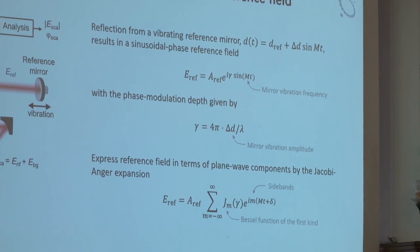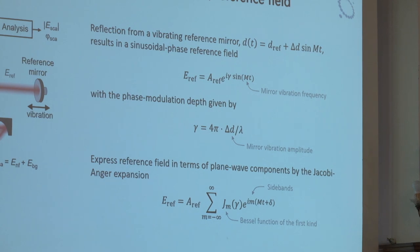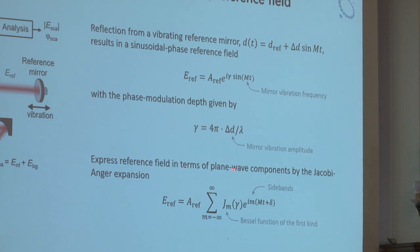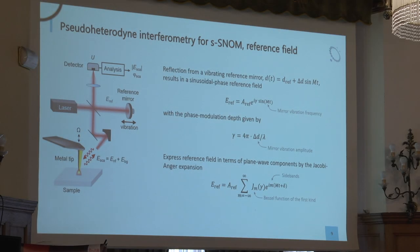This is a little tedious to work with mathematically. We expand this expression in terms of plane waves — this is the Jacobi-Anger expansion. Our oscillatory term now looks linear in time, and gamma moves in front of the exponential function. This is not just one term; we have infinite terms, and these are our sidebands in pseudo-heterodyne SNOM. Also, gamma is related to the mirror displacement delta-D and to the laser wavelength, so if you change the laser wavelength you have to recalibrate.